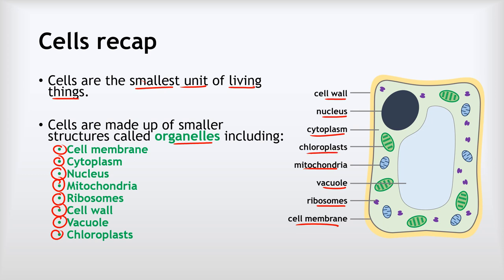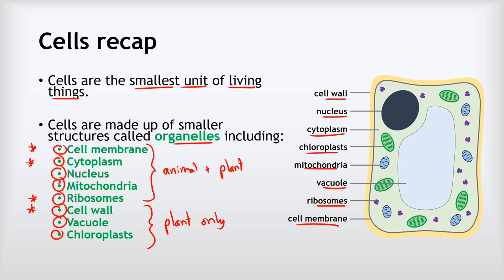It's worth noting that the first five structures are in both animal and plant cells, while the cell wall, vacuole and chloroplasts are plant only. That's not quite true for bacterial cells — they have the cytoplasm, cell membrane, ribosomes, and a different kind of cell wall. But for animal and plant cells, those bottom three are only in plant cells.